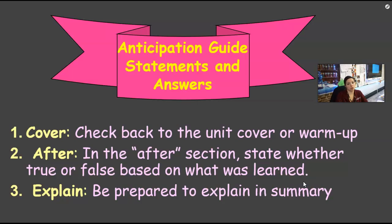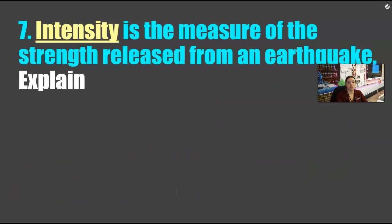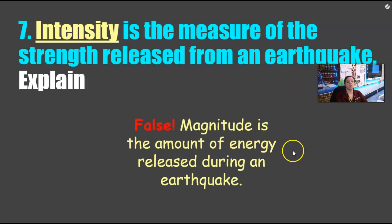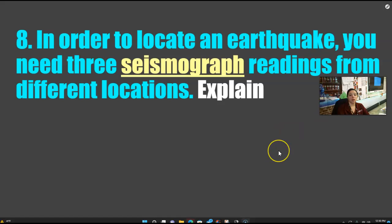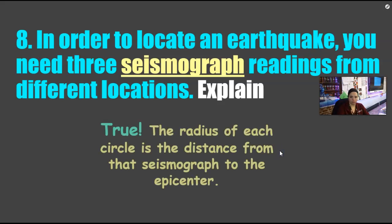Let's go back to the anticipation guide, questions 7 and 8. Number 7: 'Intensity is the measure of the strength released from an earthquake' — this is false. Magnitude is the amount of energy released during an earthquake. Number 8: 'In order to locate an earthquake, you need three seismograph readings from three different locations' — this is absolutely true. The radius of each circle is the distance from the seismograph station to the epicenter.